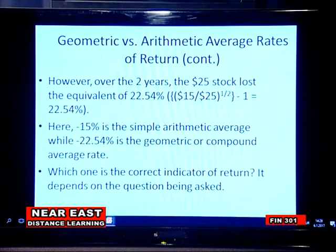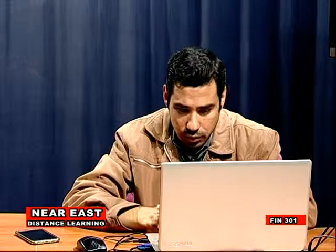For example, if we invest in a stock starting at $25, after one year the stock rises to $30. In the second year it falls to $15. What is the average return on this investment? If we calculate using the simple arithmetic average, the result will be approximately minus 15 percent. But if we calculate using the geometric average rate of return, the result is approximately minus 22.5 percent. Which one is correct — geometric or arithmetic?